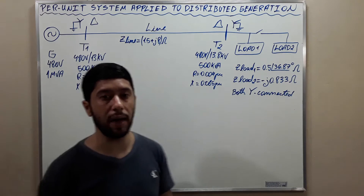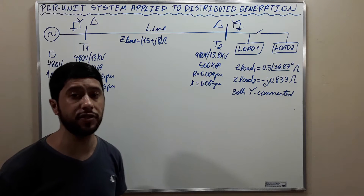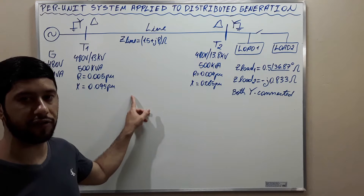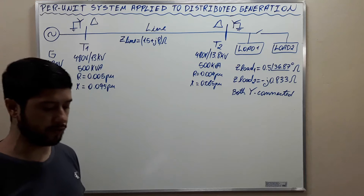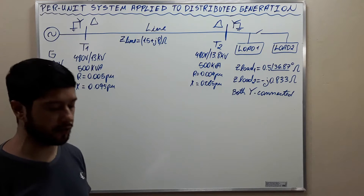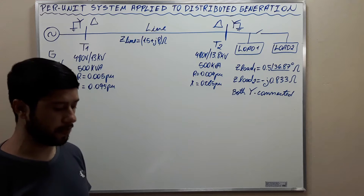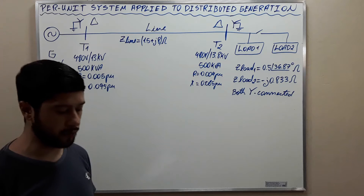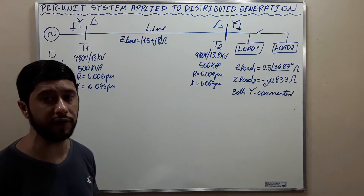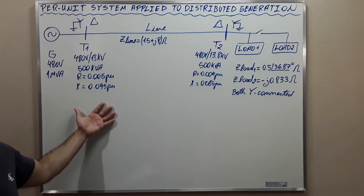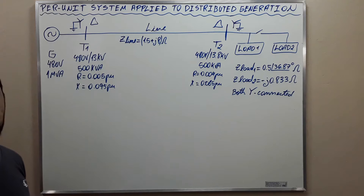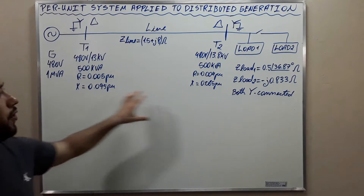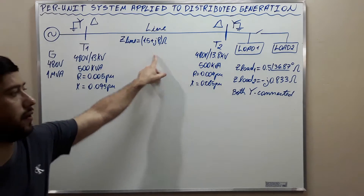Per unit system applied to distributed generation — the exercise. The figure shows a distributed generation power system consisting of a three-phase, 480 volts, 60 hertz small hydro generator, supplying two loads through a distribution line with a pair of transformers within substations at either end of the line. The exercise provides information for the generator, the transformers, the distribution line, and the loads.